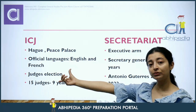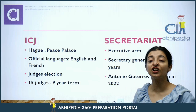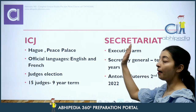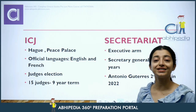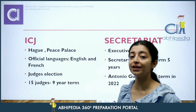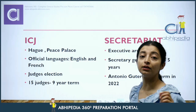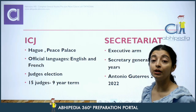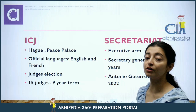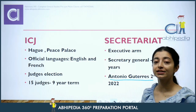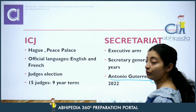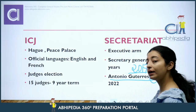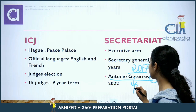Now let's talk about the Secretariat. While the ICJ was the judicial arm, the Secretariat is the executive arm. The policies made by UNGA need to be implemented, so the Secretariat is the body that implements them. The head of the Secretariat is the Secretary General, whose term is 5 years. Currently, the Secretary General is António Guterres, who has started his second term and has been in the role since 2017. He is a diplomat from Portugal.